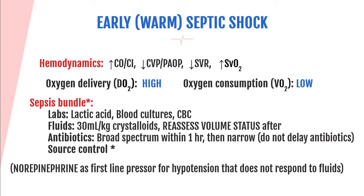In early or warm septic shock, the hemodynamics include an elevated cardiac output and index because the sympathetic response kicks in. The massive inflammatory response and endotoxins increase capillary permeability, causing significant capillary leak, which decreases preload. The inflammatory response also causes massive vasodilation, decreasing SVR. The late septic shock hemodynamics differ from early, but early or warm septic shock is most tested on the CCRN. For sepsis treatment, the evidence-based bundle includes labs, fluids, and antibiotics. Draw a lactic acid, blood cultures, and CBC; give 30 ml/kg crystalloid bolus, and start norepinephrine (Levofed) if MAP persists below 65 despite fluid resuscitation.